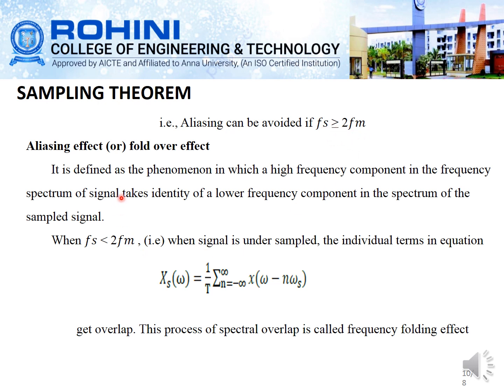Next is the aliasing effect, also called the fold-over effect. Aliasing is defined as the phenomenon in which a higher frequency component in the frequency spectrum of a signal takes on the identity of a lower frequency component in the spectrum of the sampled signal. When fs is less than 2·fm, the signal is under-sampled, and the individual spectral terms in the equation for X_s(ω) overlap. This process of spectrum overlapping is known as the frequency folding effect.